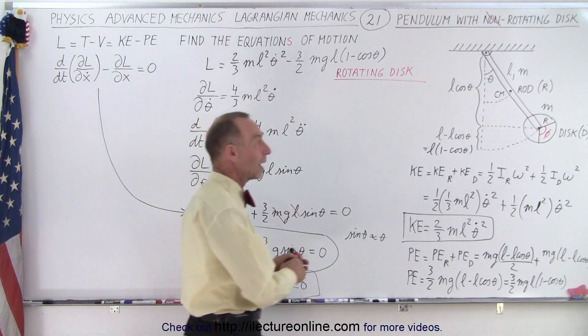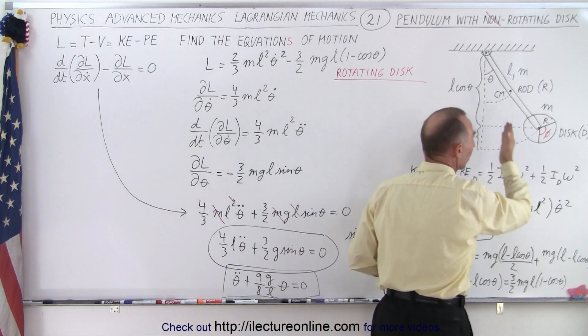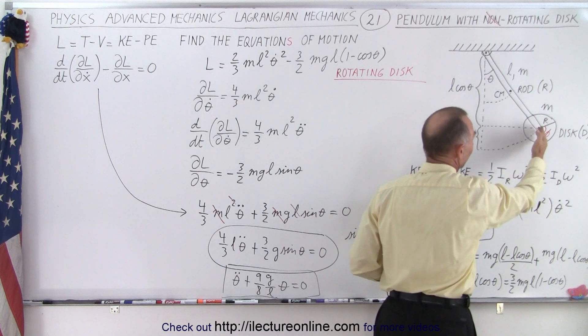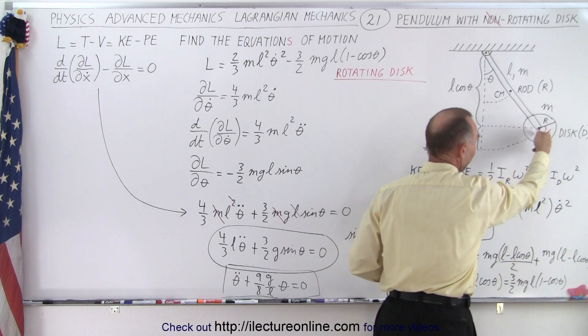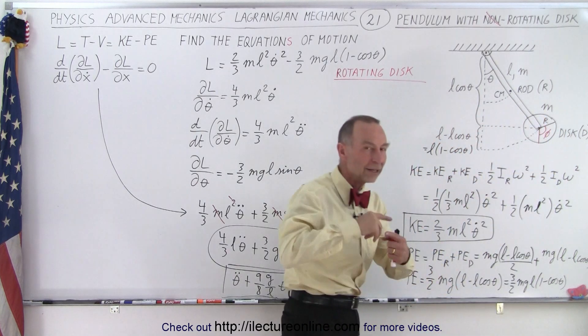However, now when we also allow the disc to rotate, we have a second variable phi, where let's assume that at the rest point the disc was vertical like this, where this line was vertical, and now it's going to swing back and forth potentially on its axis.